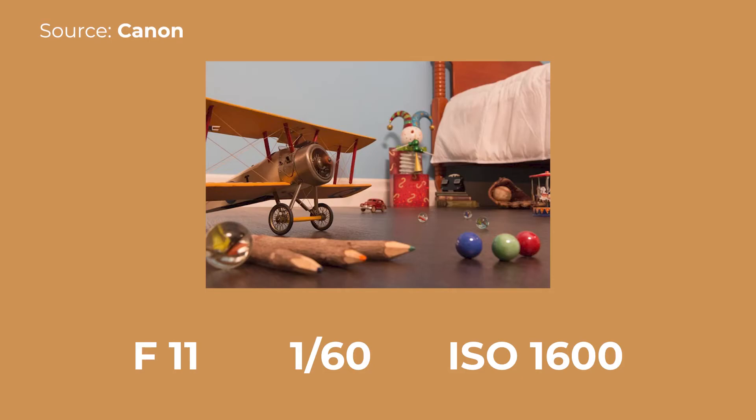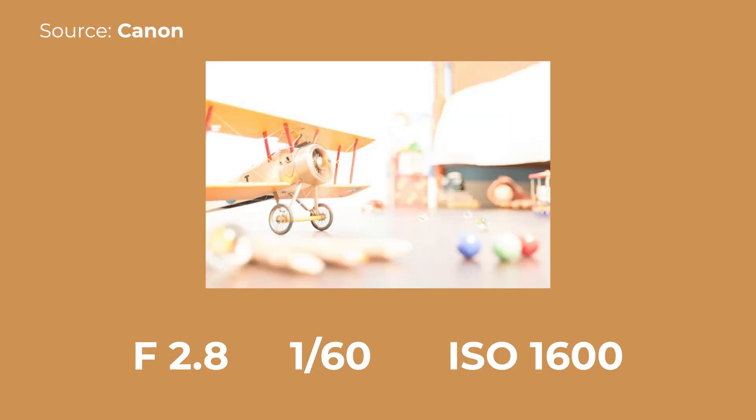So what is equivalent exposure? This refers to changing the settings on a camera to compensate for a desired aesthetic look while still maintaining an equivalent exposure. For example, let's say my image is properly exposed with an f11 aperture, a shutter speed of 1/160th, and ISO 1600. The image is perfectly exposed, but I'm hoping to have a more shallow depth of field. To achieve this, I open the aperture to f2.8, which is 4 stops brighter than f11. This means my image is now 4 stops overexposed. To achieve a proper equivalent exposure, I would need to either have a faster shutter speed, lower my ISO, or both.